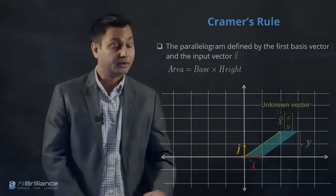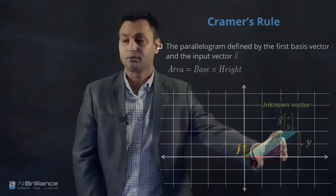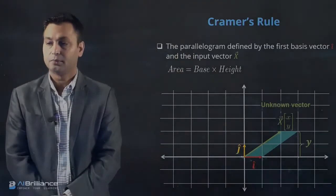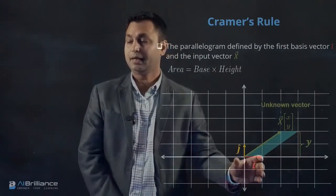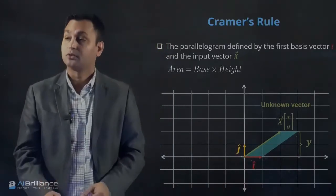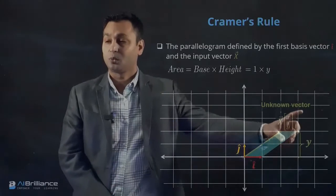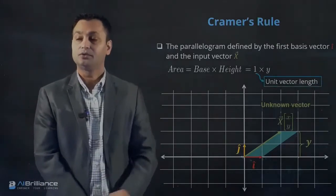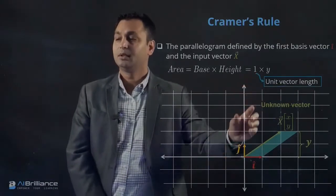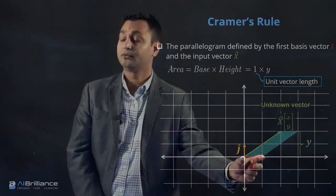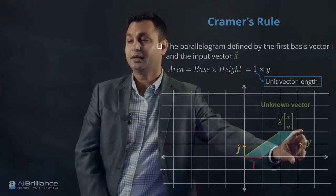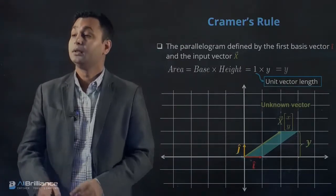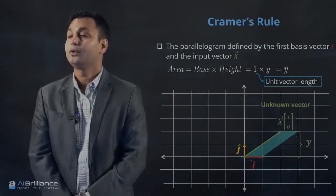The area of this parallelogram is equal to base multiplied by height. Since I is a unit vector, the base is one. The height is Y — the second coordinate of the X vector. So the area equals one times Y, which equals Y. We can use this area of the parallelogram formed by the unit vector I and the unknown vector X as a basis.